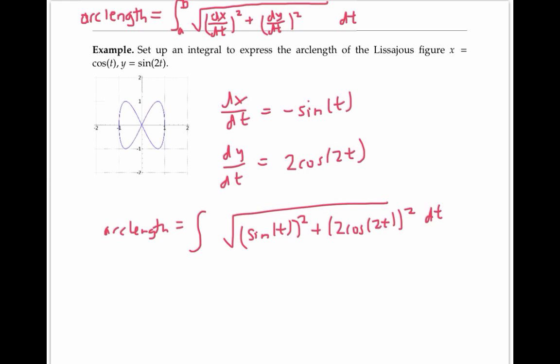We do still need to figure out the bounds of integration in terms of t that'll make us wrap around this curve exactly one time. It's easy to check that when t equals zero, x is equal to one and y is equal to zero. So we're at this point right here.